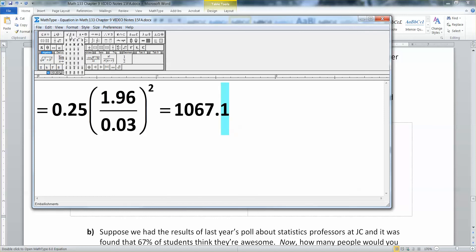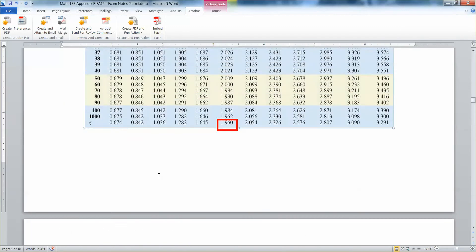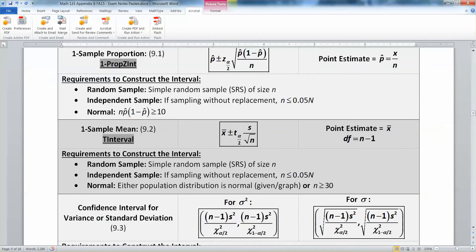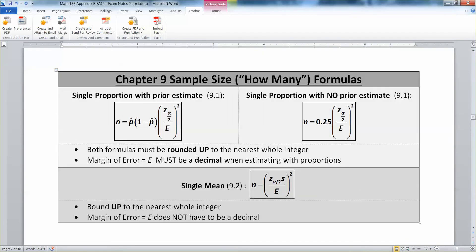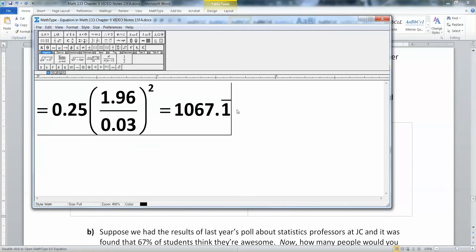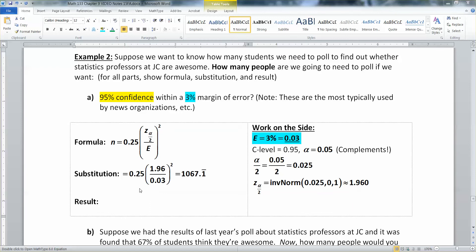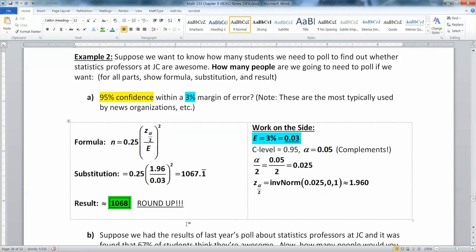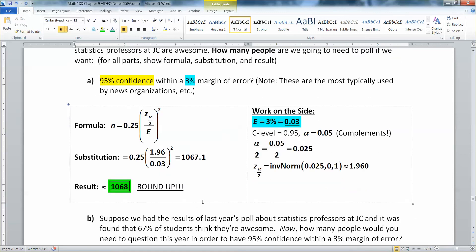Now here's the thing. You can't poll 0.1111 of a person. That's impossible. So we need a way to round this. And according to the formula, we must round up no matter what. It's right here. They must be rounded up. You need that extra 0.1 of a person in order to get the confidence and the error you wanted, in order to get that precision you wanted. So you can't round it down even though it's kind of low. So you have to round it up to 1068. And that's our result. Make a note to yourself that you have to round up.